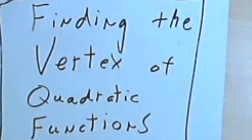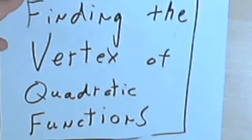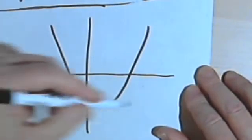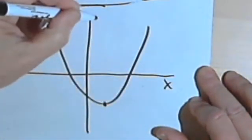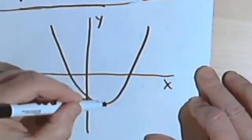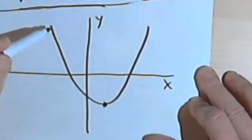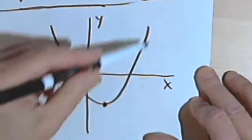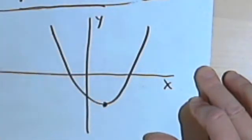This video is going to be about finding the vertex of quadratic functions. So just so you understand what we're looking for, here's a rough graph of a quadratic function. I've got a horizontal axis and a vertical axis, and I've got this point down here where the line changes direction. It had been going downwards and now it's going up, and that point is the vertex.